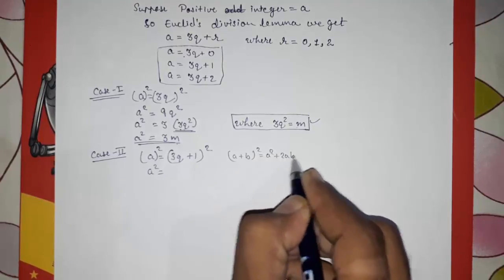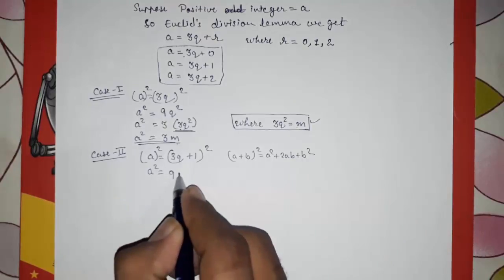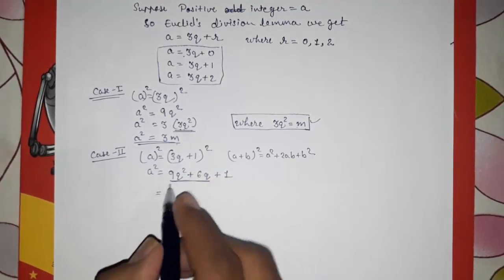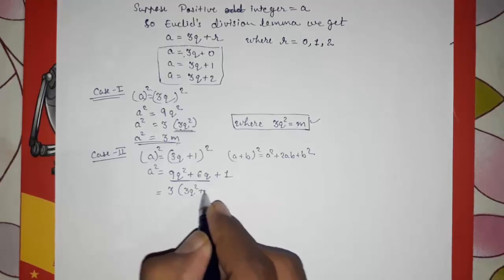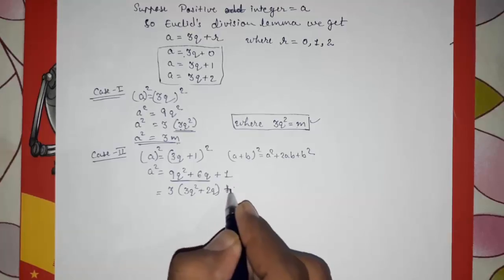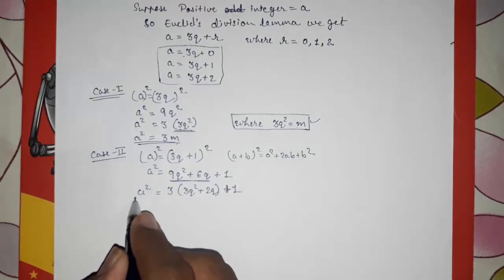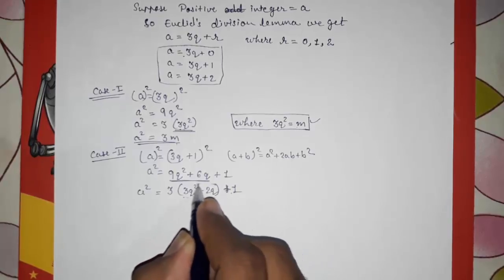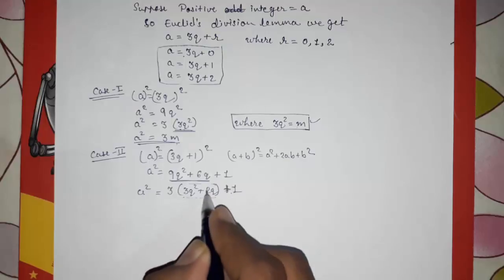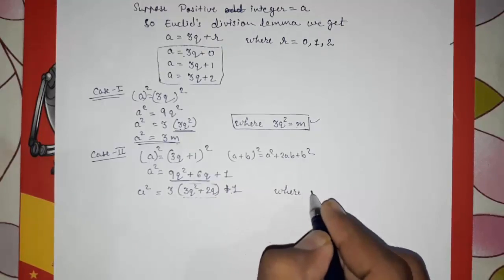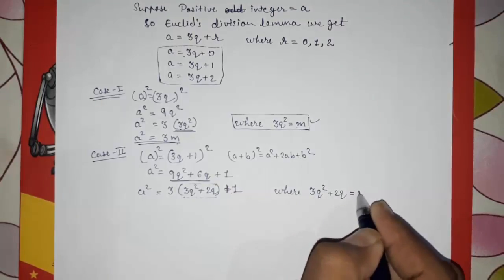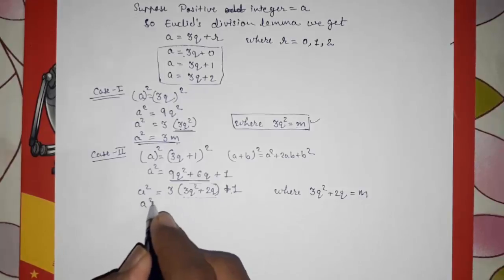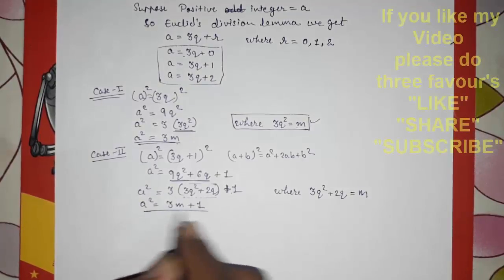So a² = 9q² + 6q + 1. Taking 3 common from the first two terms: a² = 3(3q² + 2q) + 1. We let m = 3q² + 2q, which is our quotient. Therefore a² = 3m + 1. This is our second answer.